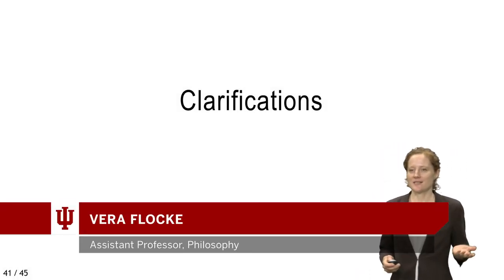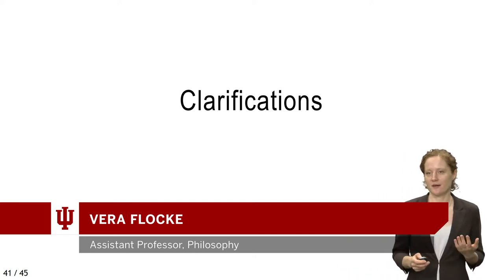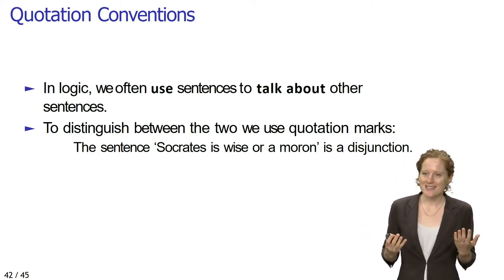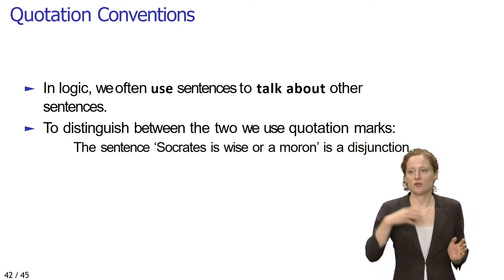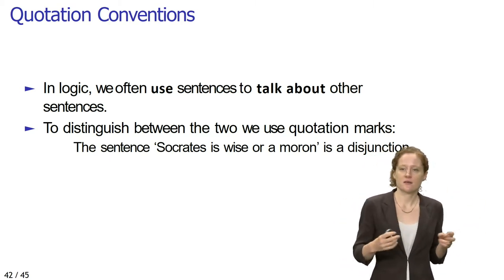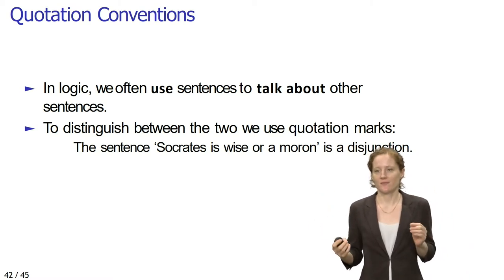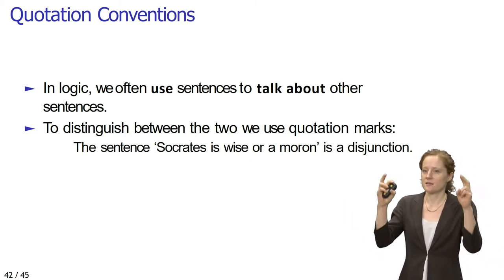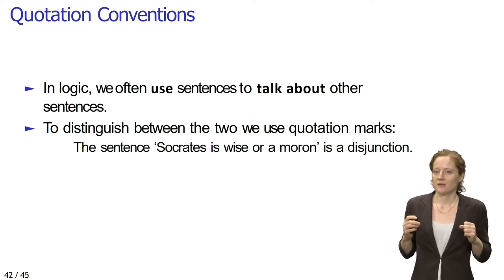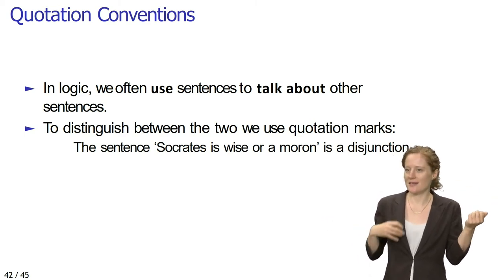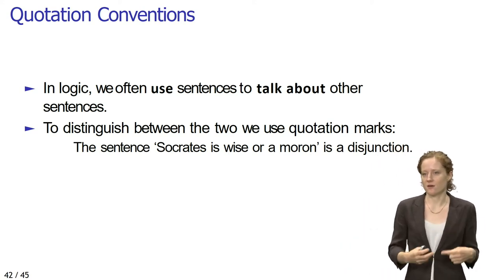Let's wrap up this lecture by discussing a few clarifications that hopefully are going to avoid confusions in what follows. In logic, and in this class, we often use sentences to talk about other sentences. For example, you may say that the sentence 'Socrates is wise or a moron' is a disjunction. Here we are using this entire sentence in order to talk about the embedded sentence 'Socrates is wise or a moron.'